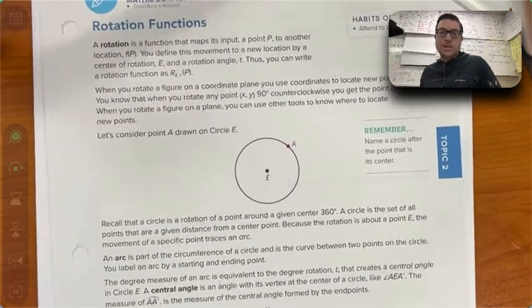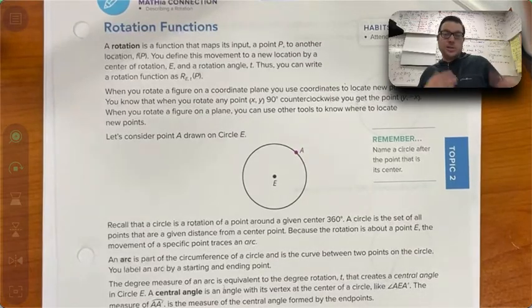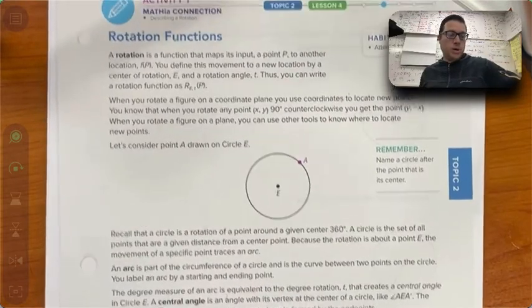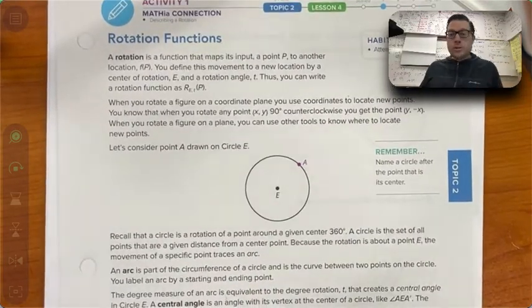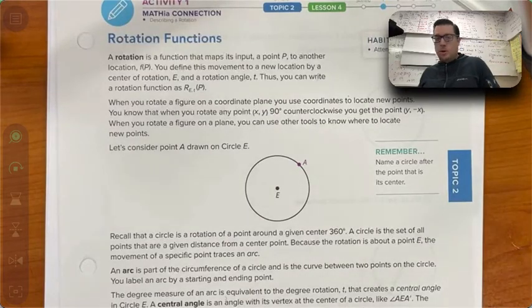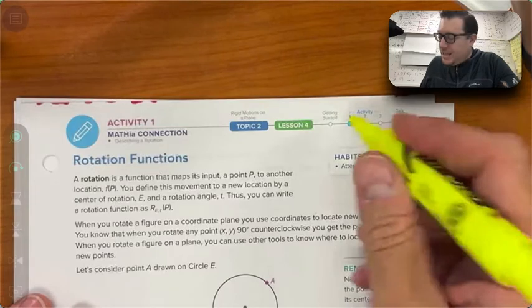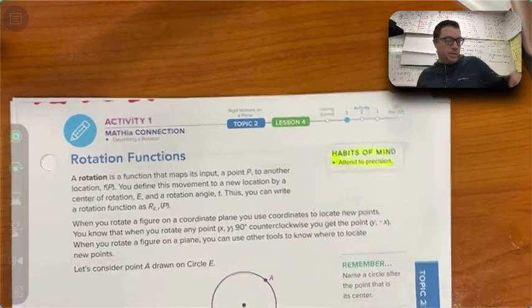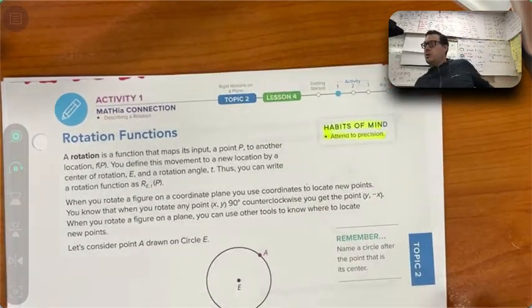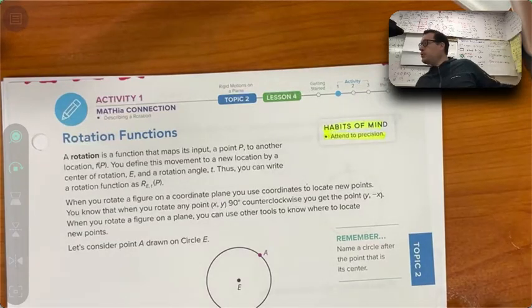Now let's go to page 131. Page 131 is activity one and there's a lot of notes in the first part, so have your highlighters. This video is really about activity one. Highlight the important words along with me. I'm going to highlight where it says habits of mind, we're going to attend to precision.